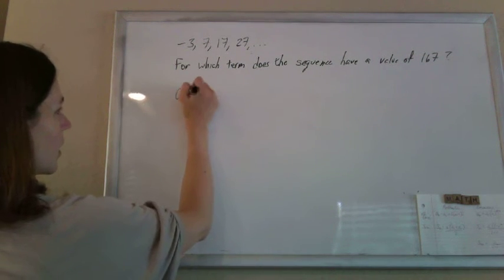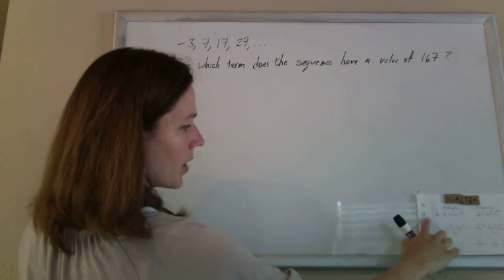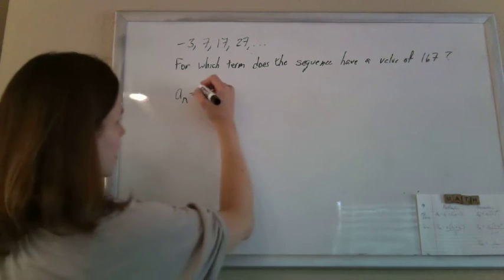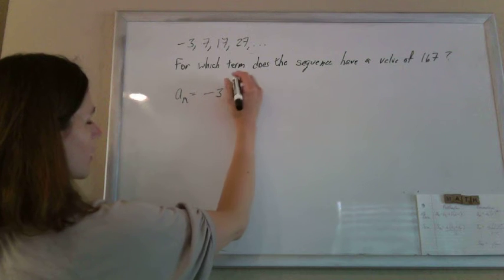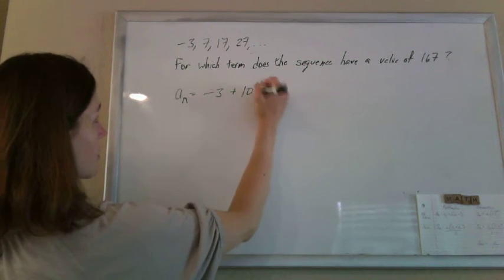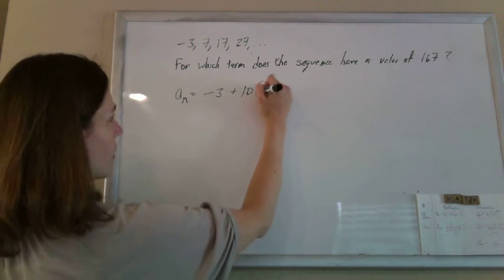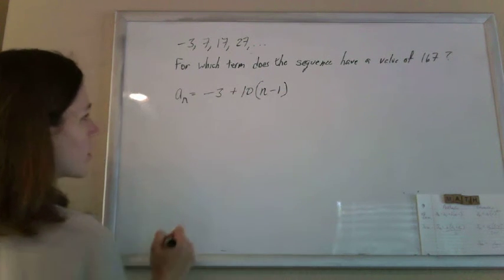So again, it's arithmetic, and so we'll bust out the arithmetic nth term formula. So it's the first term, negative 3, plus the common difference. We're adding 10 every time, n minus 1.